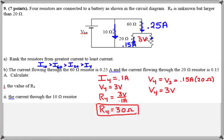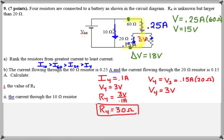The last part asks for the current through the 10-ohm resistor. Since it's in parallel with the series branch containing the 60-ohm and 20-ohm resistors, I need that branch's total voltage. The voltage across the 60-ohm resistor is 0.25 times 60, which is 15 volts, and the voltage across the 20-ohm resistor is 3 volts, giving a total of 18 volts across the 10-ohm resistor. Using Ohm's law, the current is 18 divided by 10, which is 1.8 amperes.